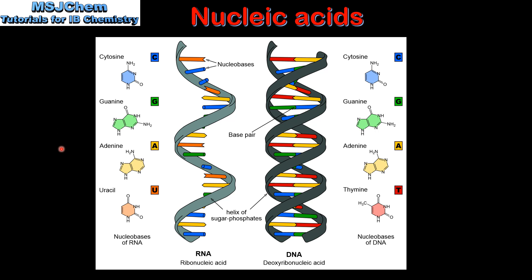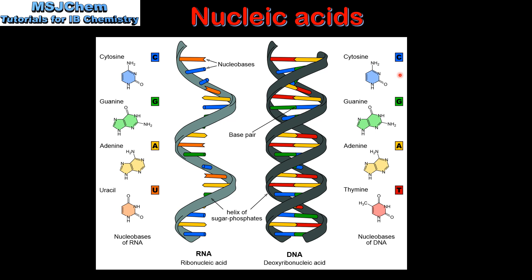So let's end with a summary. The two polynucleotides we have looked at are RNA and DNA. RNA is a single stranded polynucleotide whereas DNA is a double stranded polynucleotide. RNA has the nitrogenous bases cytosine, guanine, adenine, and uracil. In DNA the nitrogenous bases are cytosine, guanine, adenine, and thymine. The two polynucleotide strands in DNA are held together by hydrogen bonds. Cytosine forms three hydrogen bonds with guanine and adenine forms two hydrogen bonds with thymine.